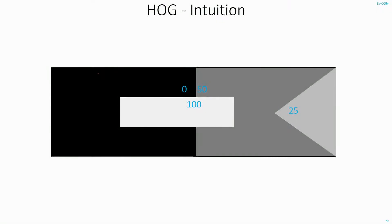HOG, that is histogram of oriented gradients, is one of the popular feature extraction techniques in the field of computer vision. Before we get into the details of HOG algorithm, let's try to get an intuition behind it.